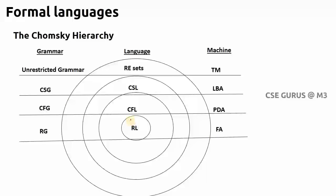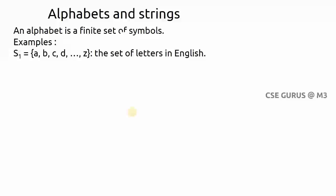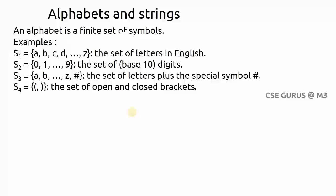Your subject is all about machines, languages, and grammar. First we will study finite automata, then the remaining machines. The basic thing about languages starts from alphabets and strings. An alphabet is a finite set of symbols. Examples include English letters, decimal digits (base-10 numbers), and other symbol sets. From an alphabet you create strings, and a collection of strings forms a language — these are called formal languages.